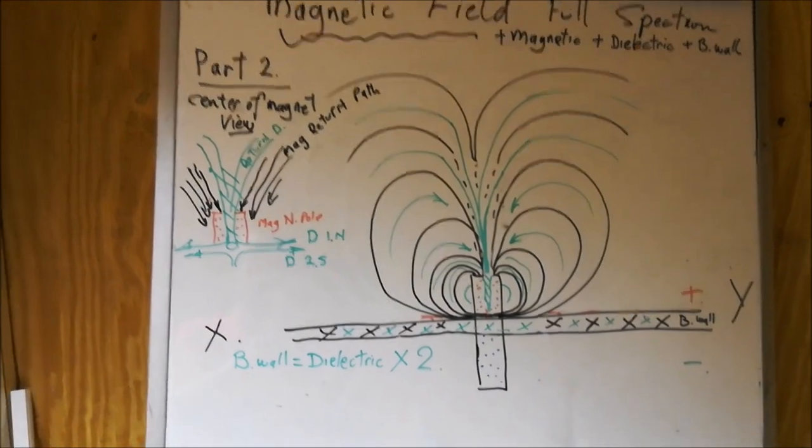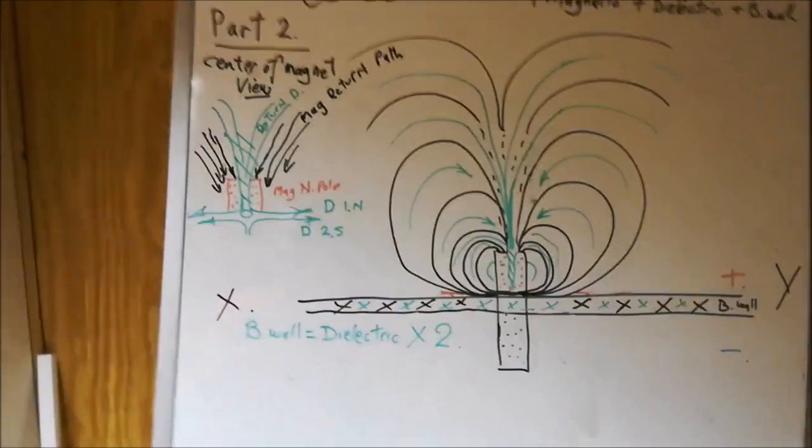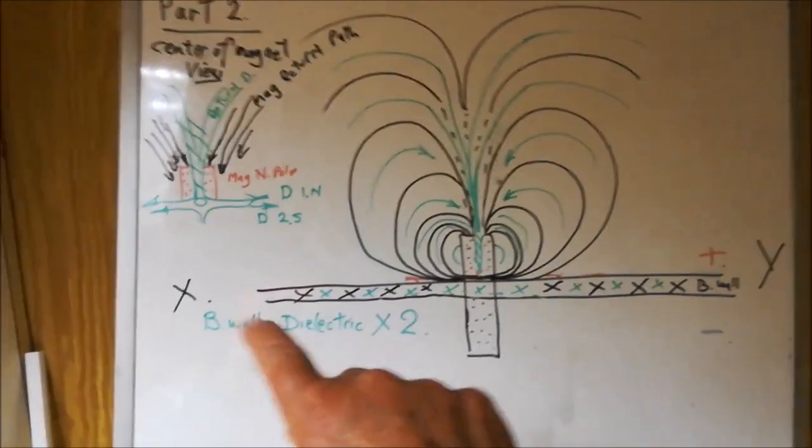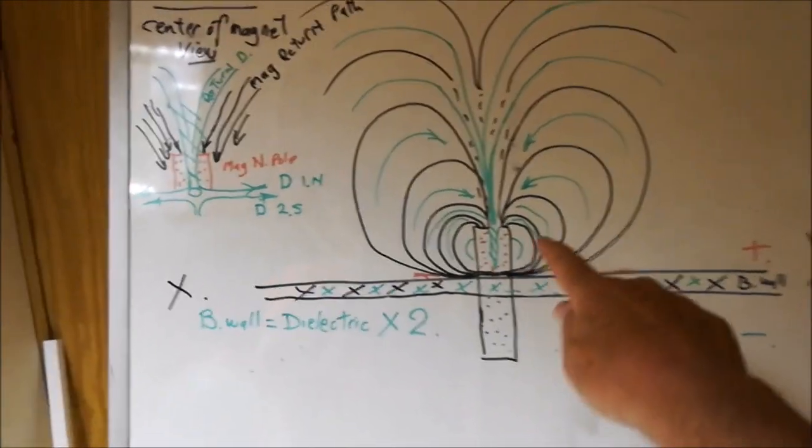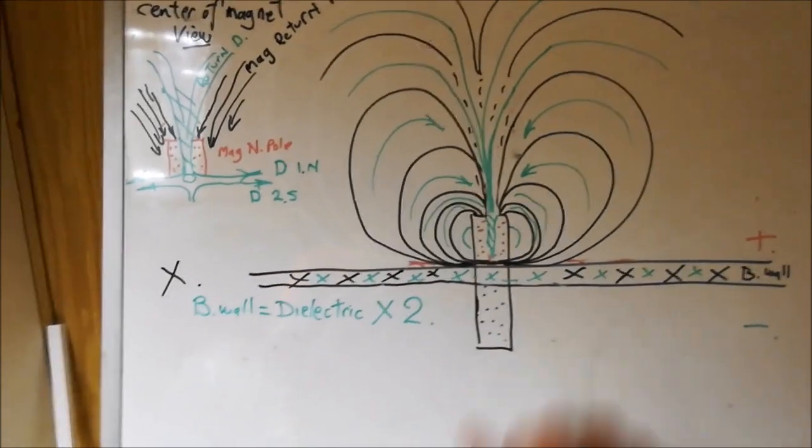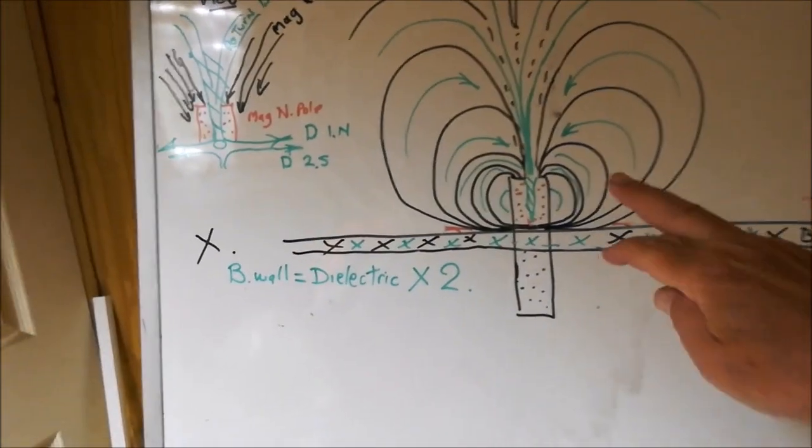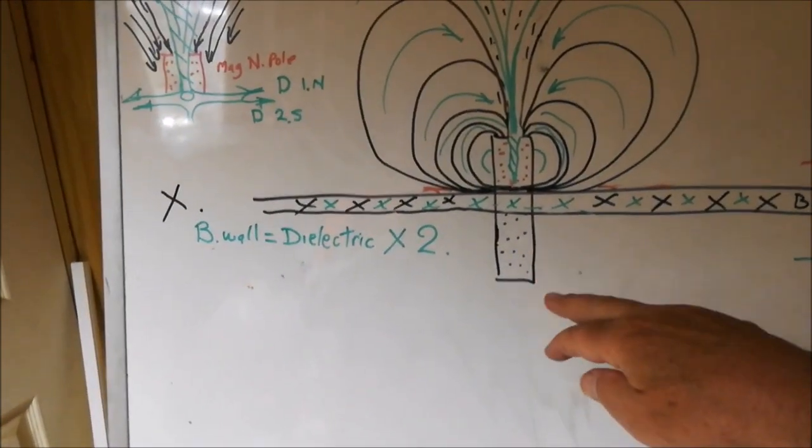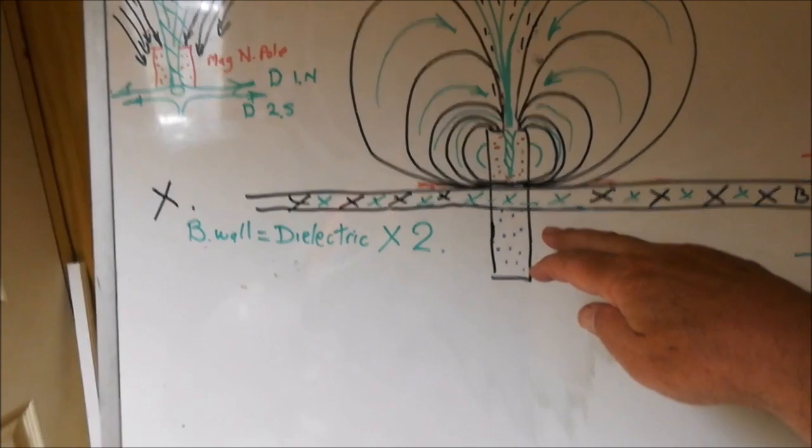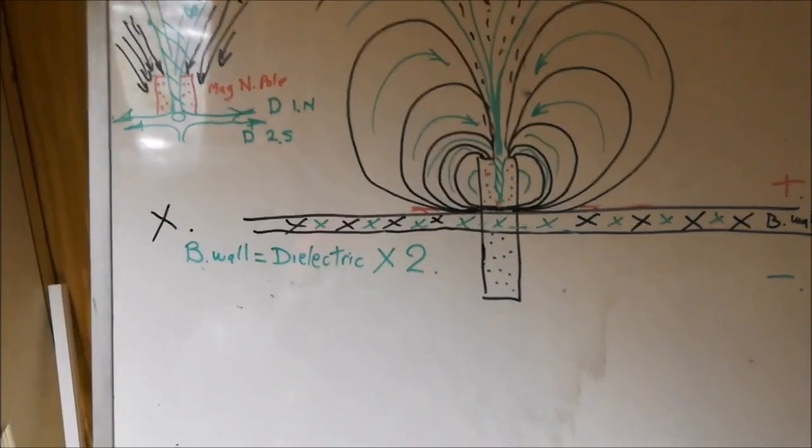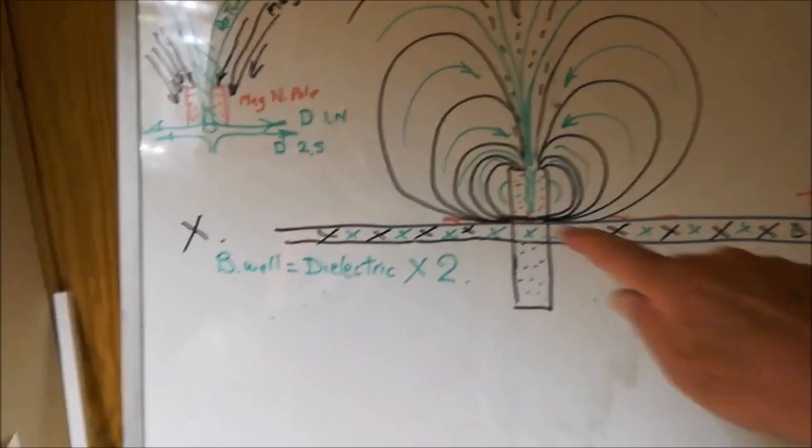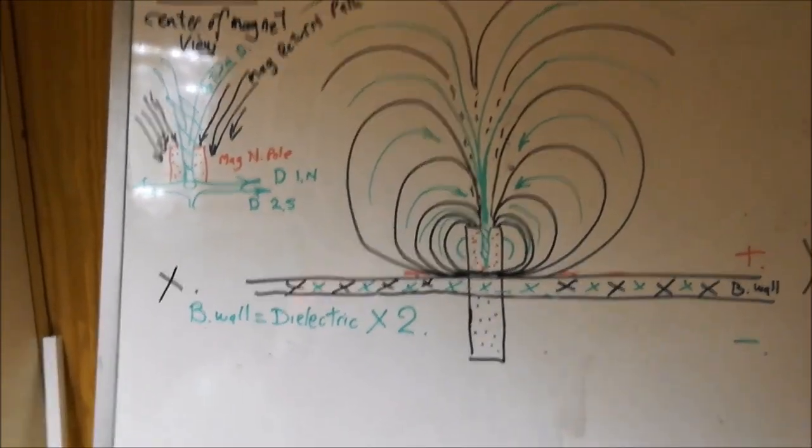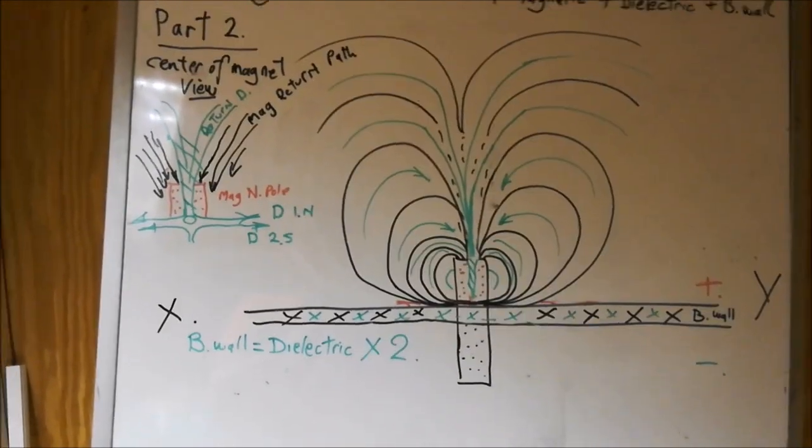For those that were following me, my theory or my findings go so far as we've got here in a magnet. This square or oblong represents a magnet, and then you've got the dotted red, which is the north field, and the blue is the south field or pole of the magnet.